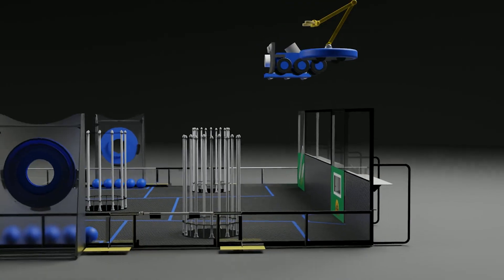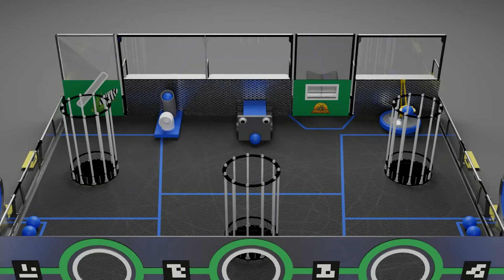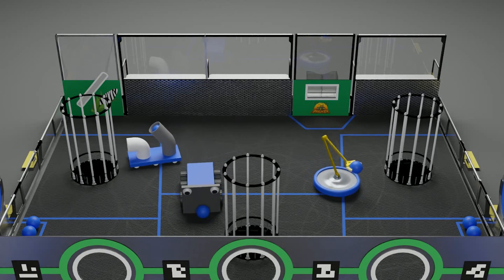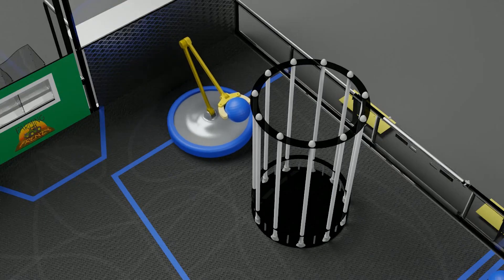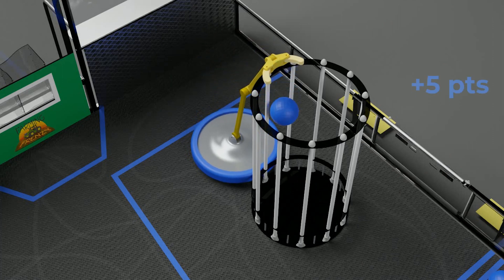Robots are set on the field along the alliance station wall with one preloaded crop. During the first 20 seconds of the match, robots are controlled in the autonomous period using pre-programmed instructions. During the autonomous period, robots earn points by cultivating plots and scoring crops into their alliance's silos.